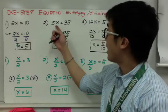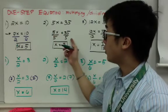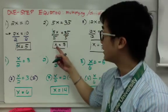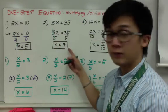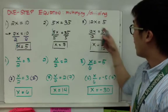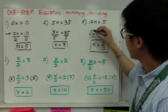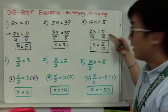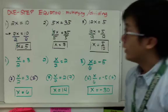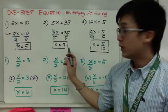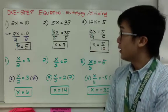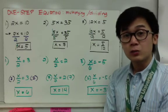For example 2, 5x equals 35: divide both sides by 5, so x equals 35 divided by 5, which is 7. For example 3, 12x equals 5: divide both sides by 12. Since 5 and 12 don't divide evenly, the answer is x equals 5 over 12, a proper fraction. Don't be scared — answers can be whole numbers or fractions, and both are valid in algebra.